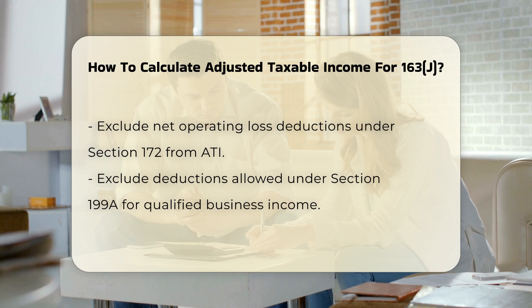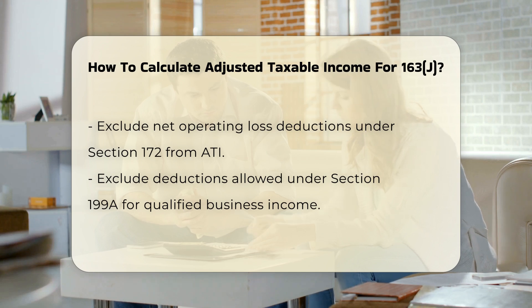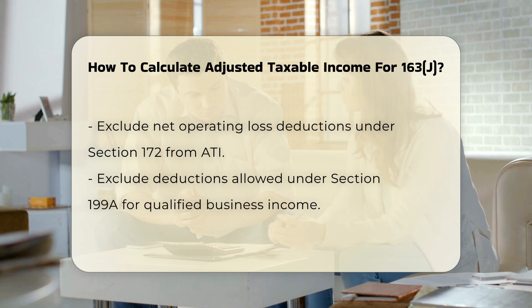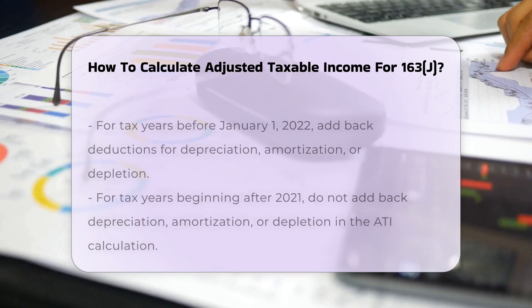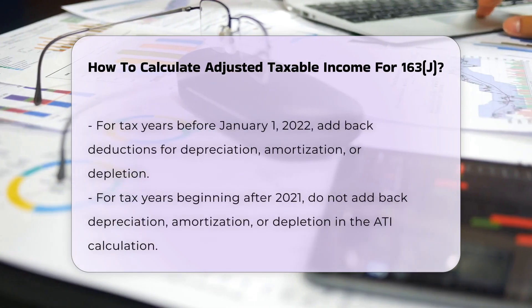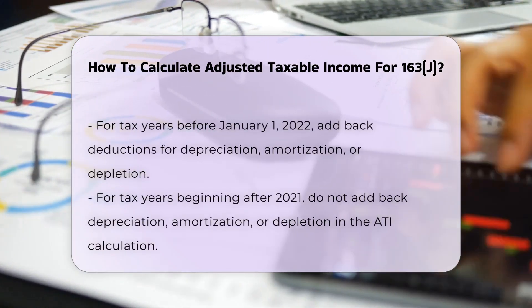Exclude Section 199A Deductions. Any deduction allowed under Section 199A, which pertains to qualified business income, is also excluded from the ATI computation.